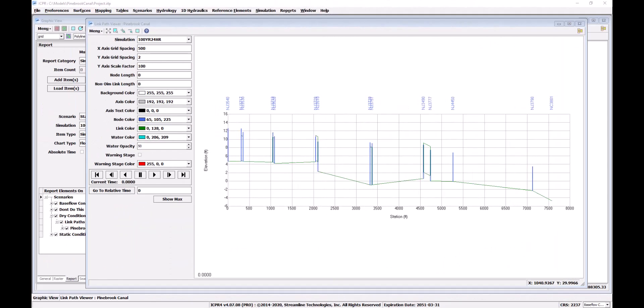The dry condition methodology assumes there is no water present in the drainage system at the start. To establish this dry condition, each node was assigned an initial stage equal to the ground elevation. This flood profile is dry until we click play and allow the simulation to progress.